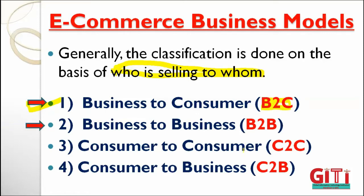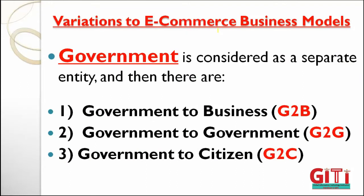Note down important points: next is Business to Business, called B2B. Third one is C2C, means Consumer to Consumer. Fourth is Consumer to Business. Please note these down — these are the e-commerce business models. If asked in viva or MCQ how many e-commerce business models are there, the total answer will be seven, because the business environment also includes government models — government and citizen — available separately.